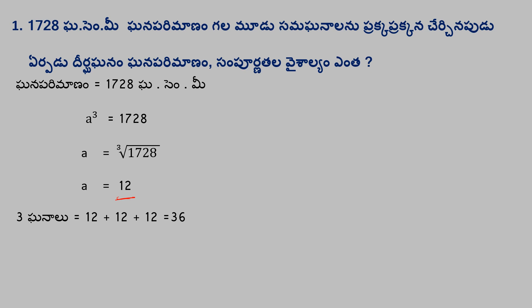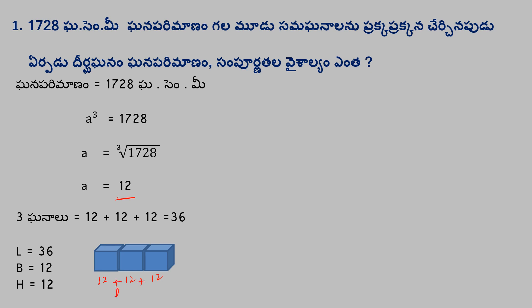The length of the cuboid is 36, the breadth is 12, and the height is 12. So B equals 12 and height equals 12.